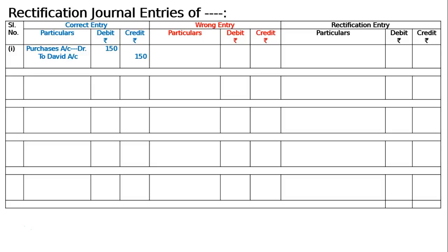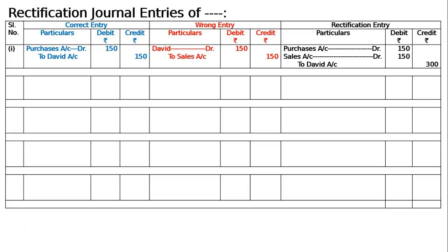The correct entry is Purchase account debited to David — debit 150, credit 150. But since it was written in the sales book by mistake, it became David debited to sales, 150 and 150. David should not have 'account' written after the name; hence only David — no 'account' after it.